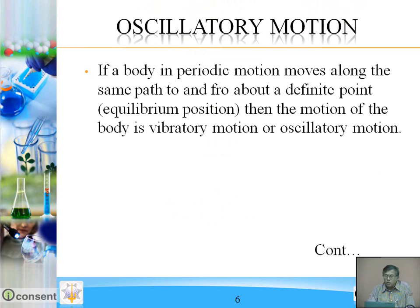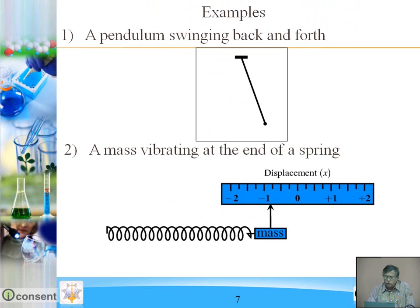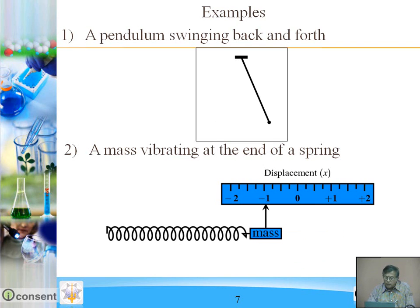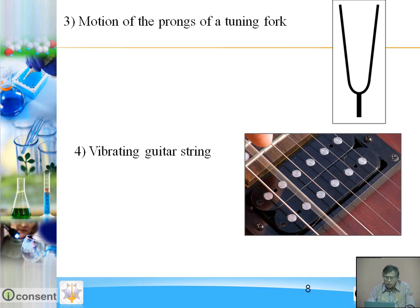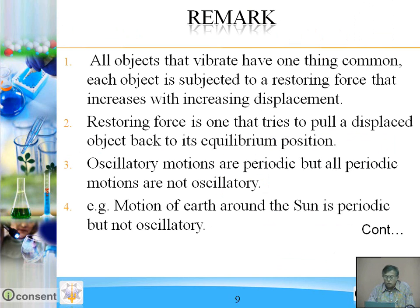Oscillatory motion. If a body in periodic motion moves along the same path to and fro about a definite point, then the motion of the body is vibratory or oscillatory motion. Examples include: pendulum swinging back and forth, a mass vibrating at the end of a spring, motion of the prong of a tuning fork, and a vibrating guitar string. All oscillatory motions are periodic, but not all periodic motions are oscillatory. For example, motion of earth around the sun is periodic but not oscillatory.